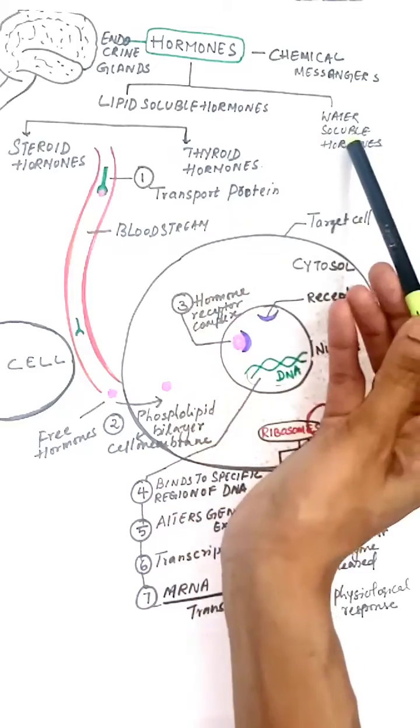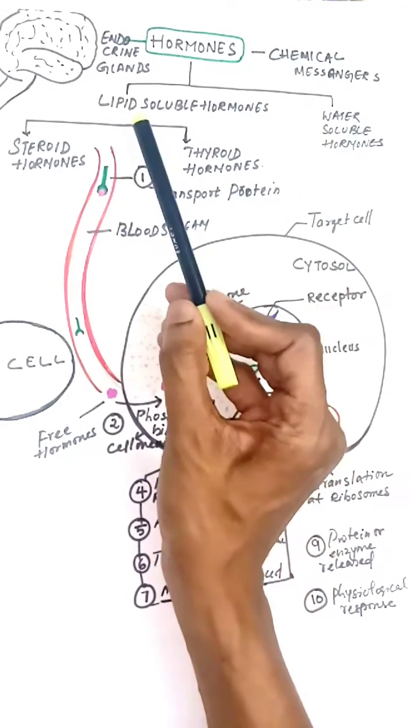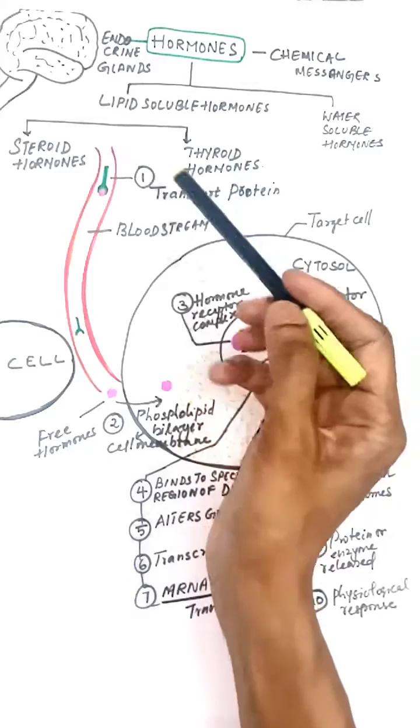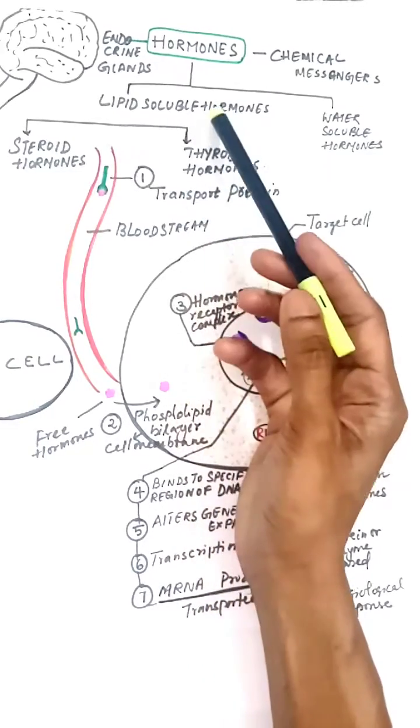Under hormones, you have lipid soluble hormones and water soluble hormones. Examples of lipid soluble hormones are steroid hormones and thyroid hormones. Today we are going to see the mechanism of pathway of lipid soluble hormones.